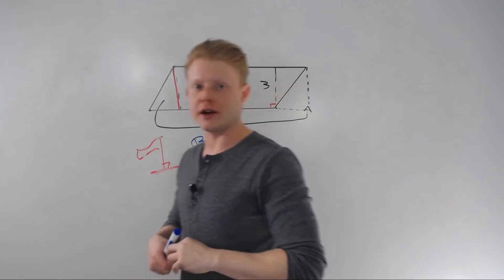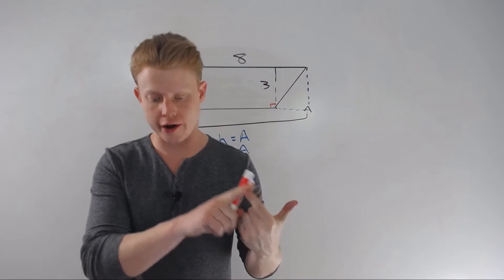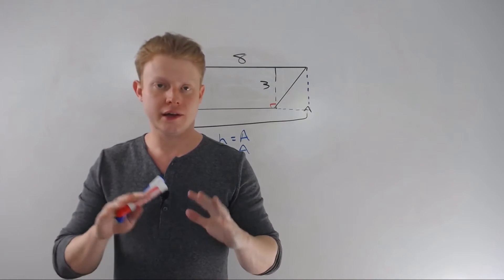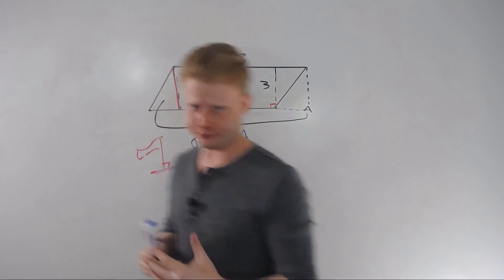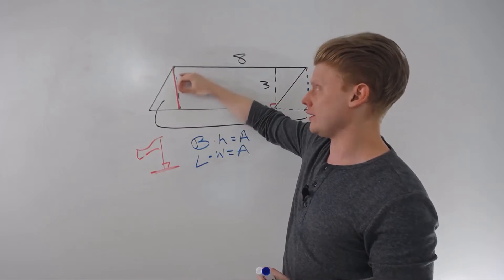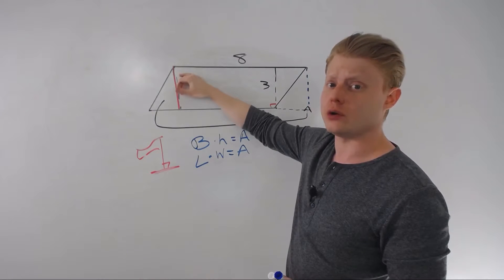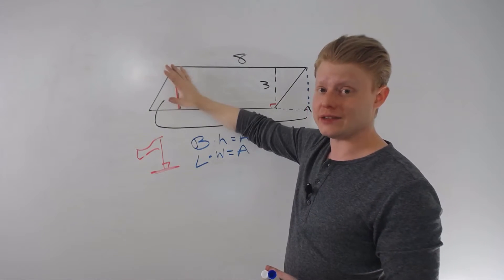It's never the slanted sides height. For any shape to find the area, you never use the slanted sides. Triangles, trapezoids, parallelograms, never use the slanted sides. So typically, if you know how long it is, you know how tall it is, you don't have to do anything else. Let it be that easy.